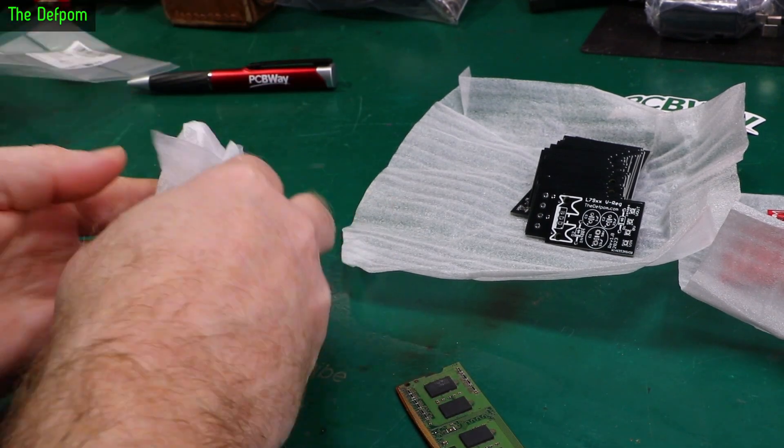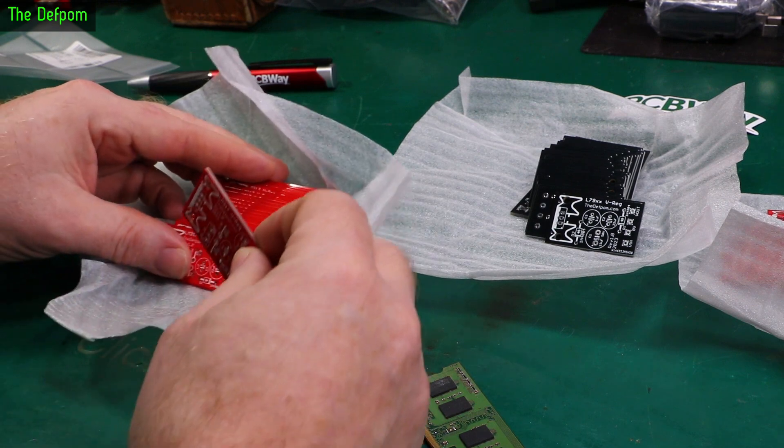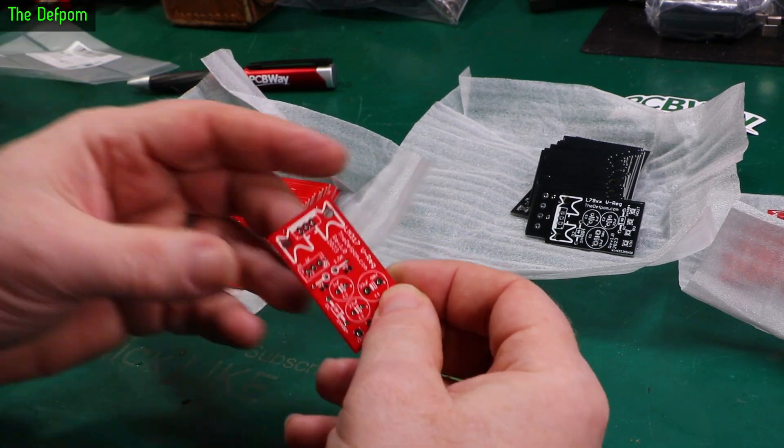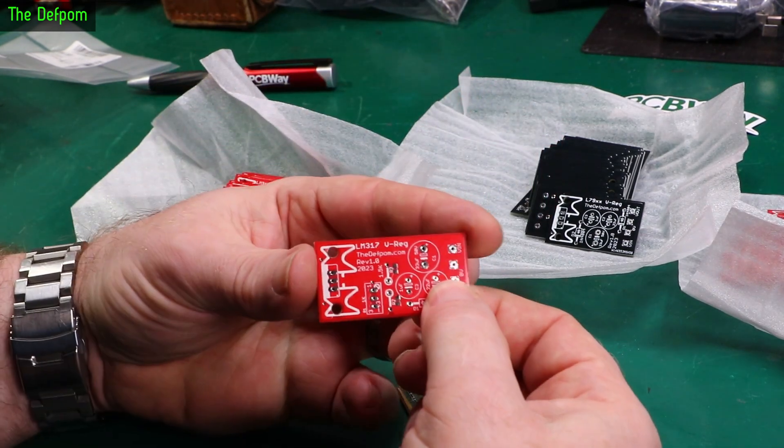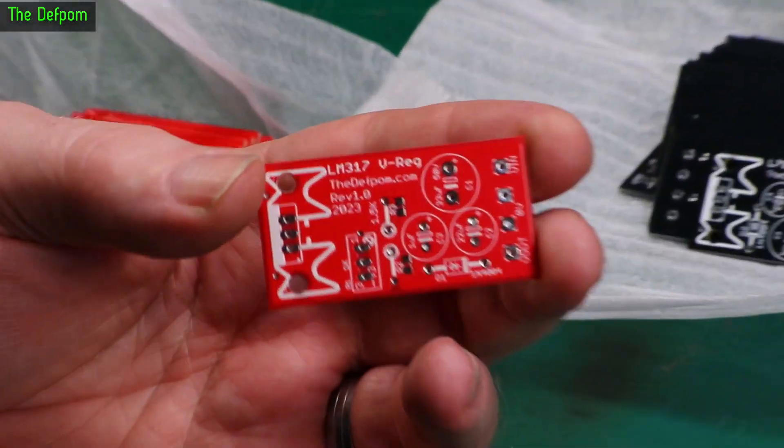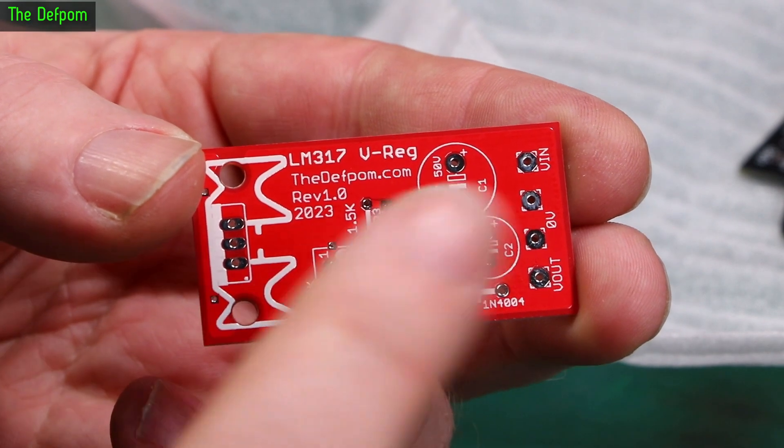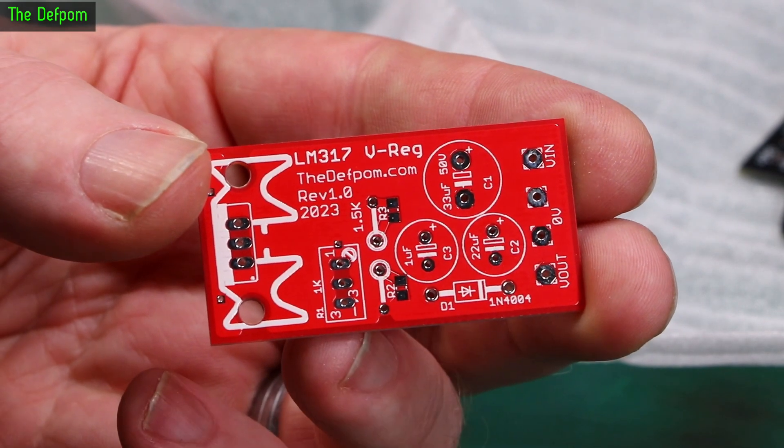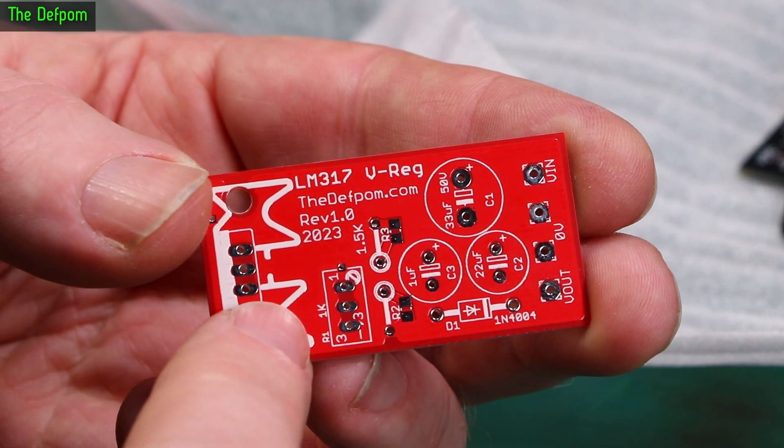Now the next one. I'm actually going to build some of these up as well and demonstrate them in use. These will be available I think to people. So if you want to actually build these yourself I'll make them available on my PCBWay page. This is the LM317 version. This is an adjustable regulator. Very similar principle. We've got a diode here on the output to stop backflow. We've got some fixed resistors here. And then we've got adjustment here as well.